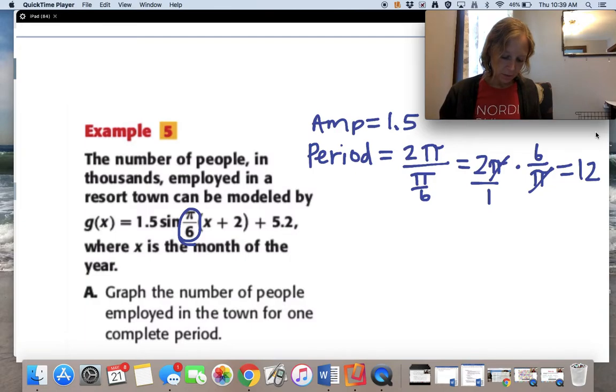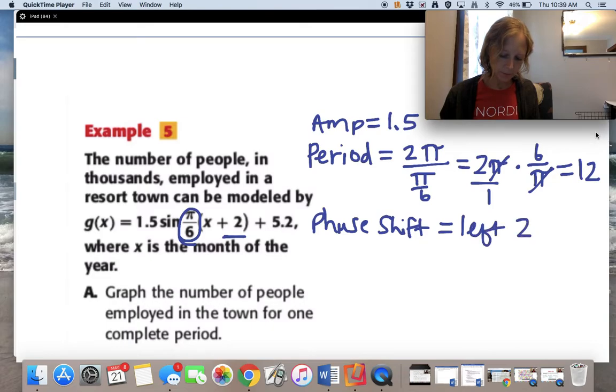I see a phase shift, and that's going to be left 2. And then I see finally a vertical shift of 5.2.